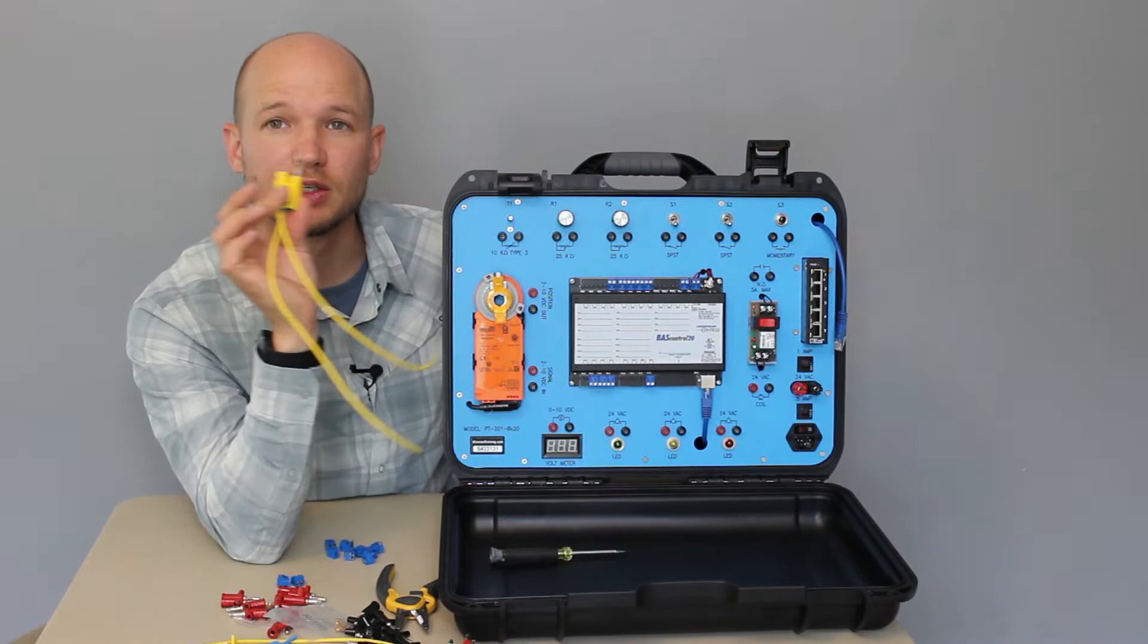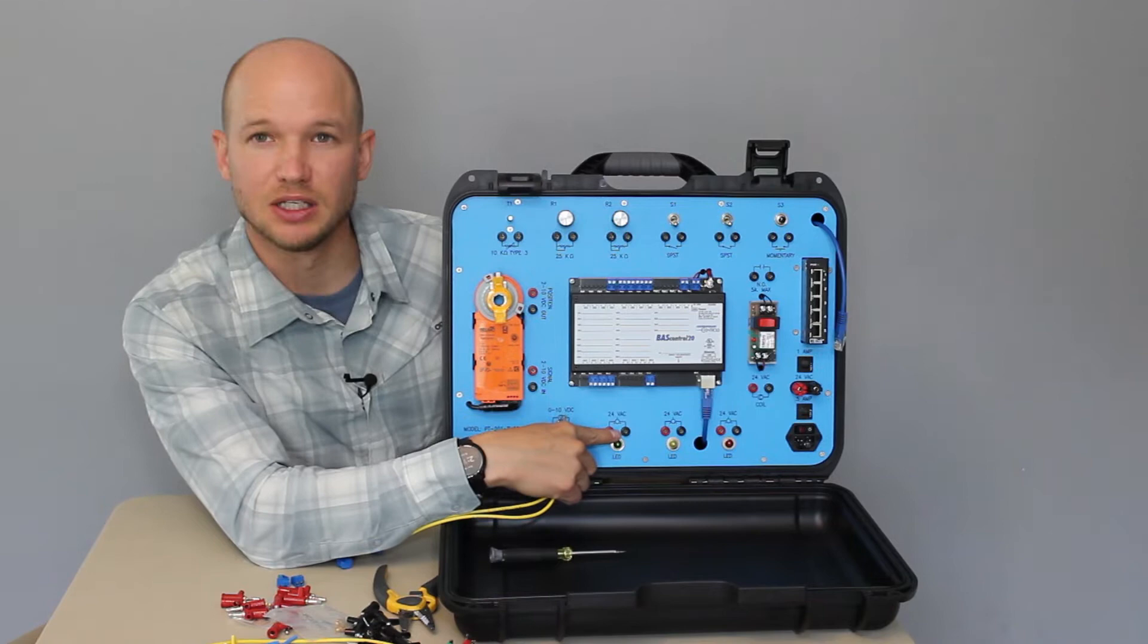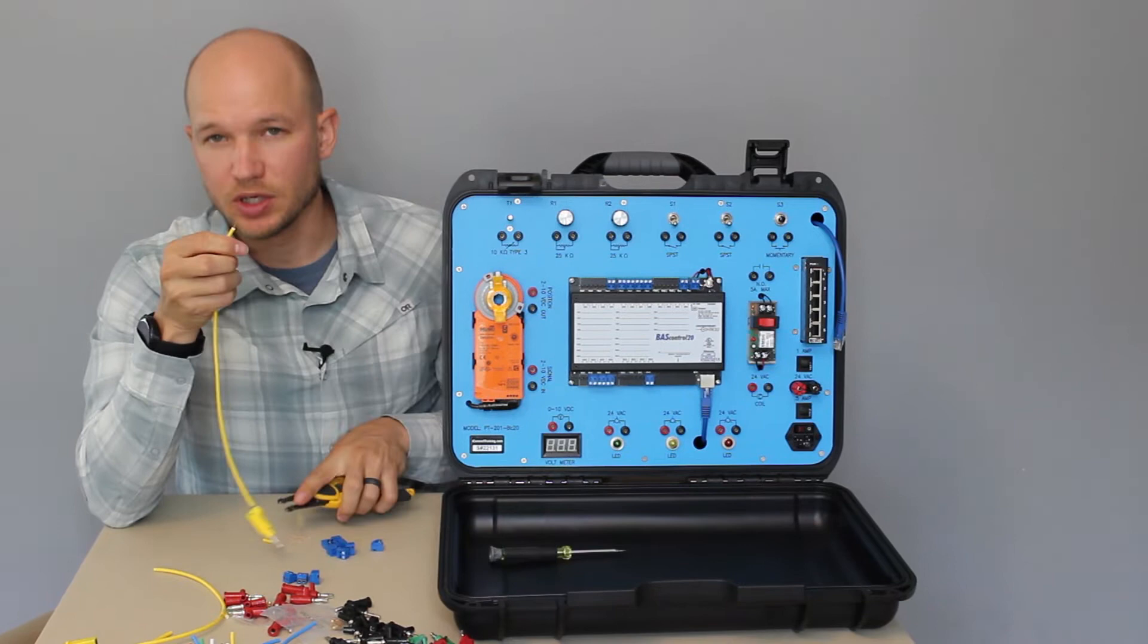So what we're going to do is we're going to have one color for the first device. So T1, I'm going to use yellow banana plugs. You could use blue or green or white. I'm going to save the black and reds for anything that needs to be polarity observed.